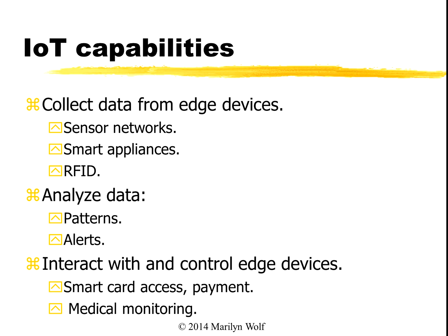We can use the Internet of Things to interact with and control edge devices. For instance, we can gather data from home monitors and identify when there might be a leak in our plumbing. We can then send an alert to a cell phone, turn off a device, all sorts of things.